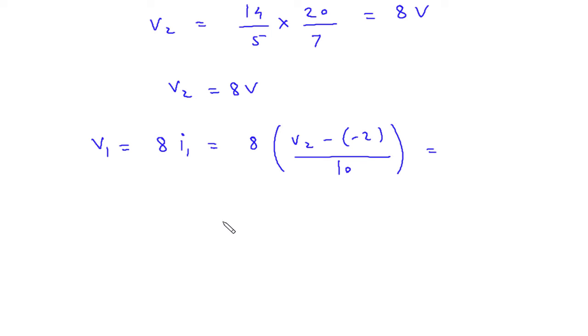V2 is 8, so 8 into 8 plus 2 by 10. So this will be 10 by 10 is equal to 8, so V1 is equal to 8 volt. So V1 is also 8 and V2 is also 8.